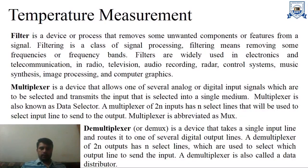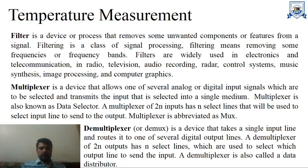At the receiving end, we have a demultiplexer. A demux is a device that takes a single input line and routes it to one of several digital output lines. A demultiplexer of 2-to-n outputs has n select lines, which are used to select which output line to send the input. A demultiplexer is also called a data distributor. At the receiving end we have a demultiplexer, and at the sending end we have a multiplexer.